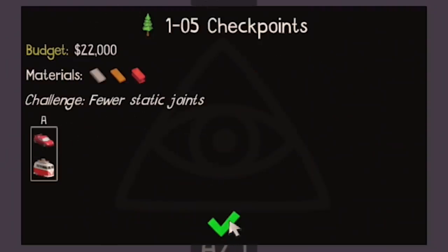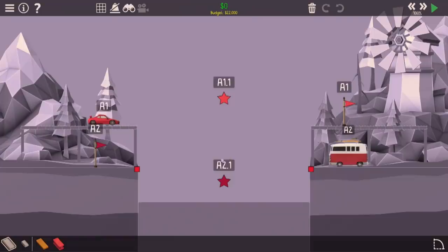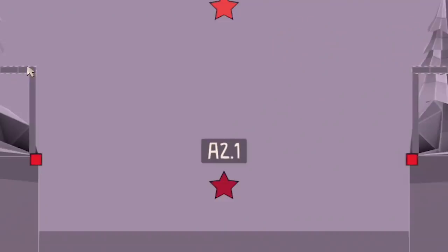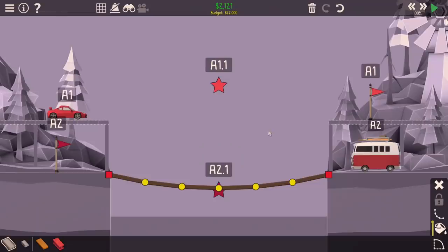Checkpoints. Fewer static joints. I'm not really sure what that means. Maybe the anchor points because I think there is probably some over here. Still though, this shouldn't be too bad. Van's going to swoop across and touch that.